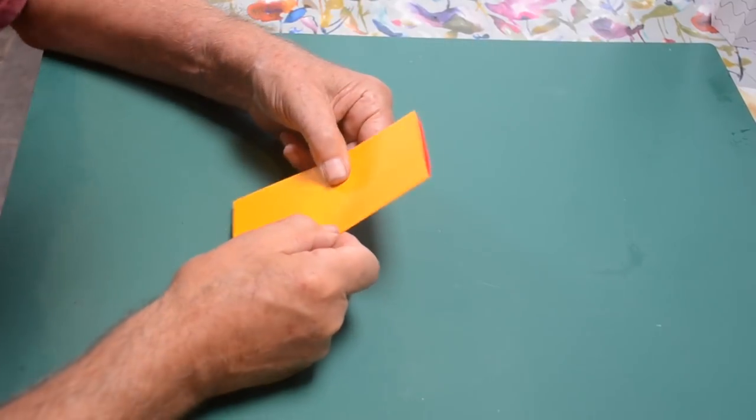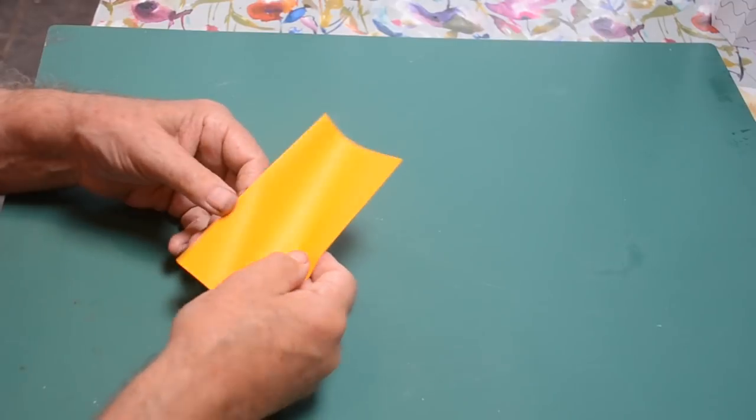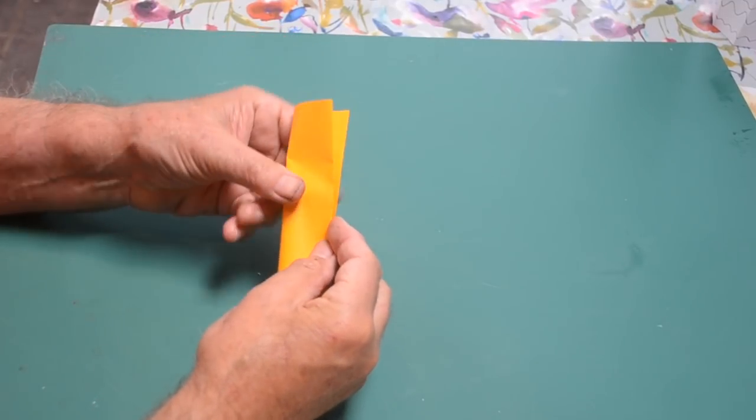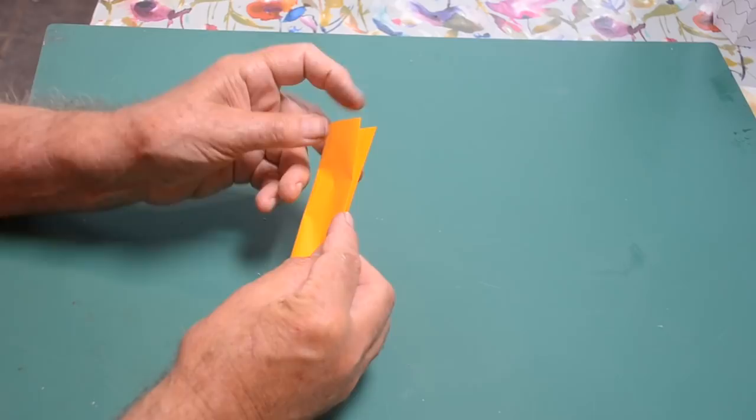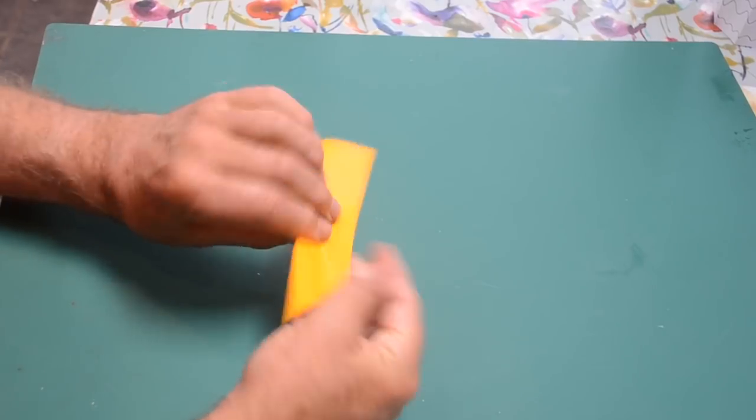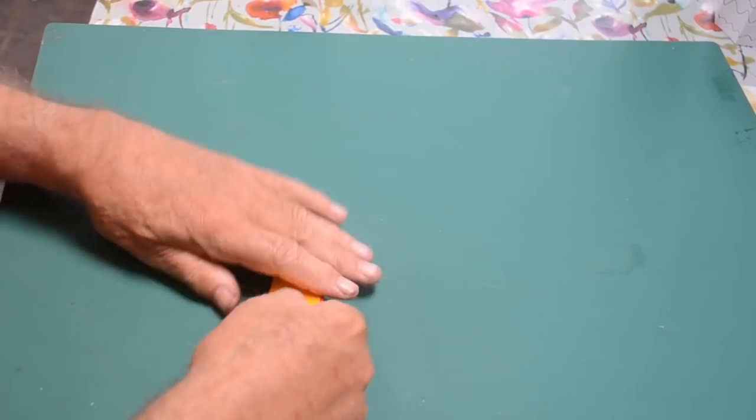You need a 4x1 strip. This is the way I get a 4x1 strip easily. Get a square and divide it into four like this. Four lengthwise, and that of course will give you four 4x1 strips.